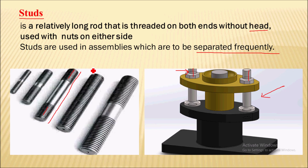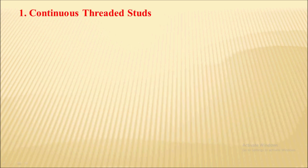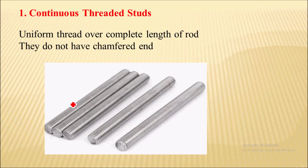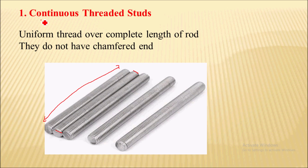Now let's see the types of stud. The first type is the continuous threaded stud — this stud will have threads on its entire length. They do not chamfer at their ends, and they have threads throughout their length. So they are called continuous threaded studs.